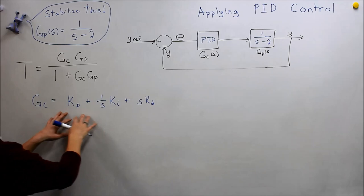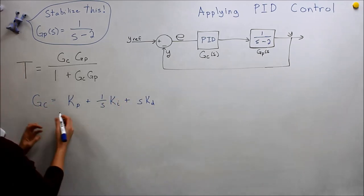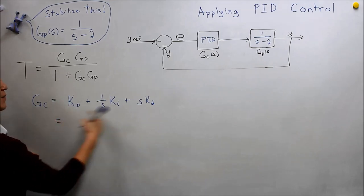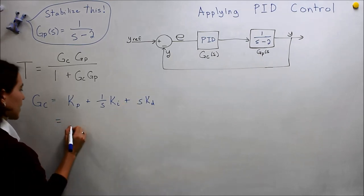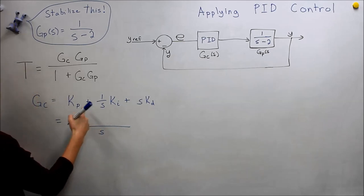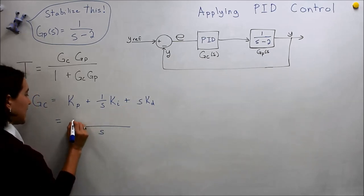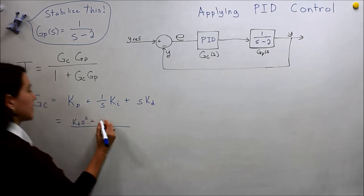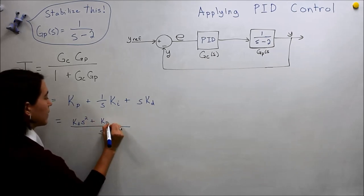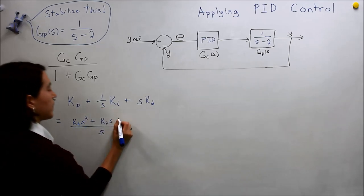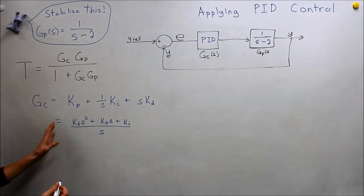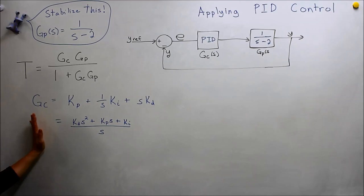Let's put this into just one, combine this into one equation, or one fraction. And if you multiply this by s over s, multiply this by s over s, we will get the expression. And I'm going to just reorder it here. So we would get KD s squared, plus this KP times s, and then plus just a KI here. So this would be the fraction form of our controller, the PID controller.